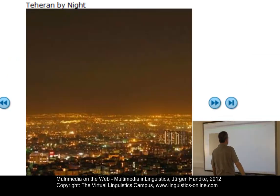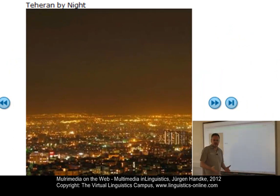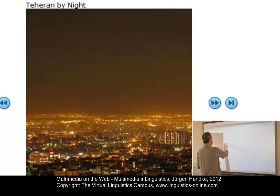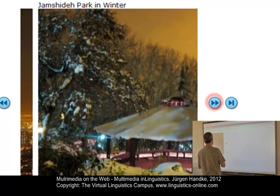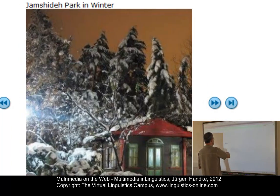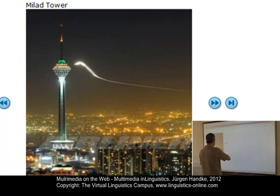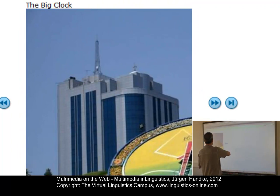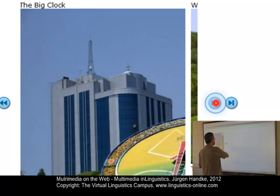And finally, we have illustrations. It is a good idea to couple language index entries with photos about a specific location. Here you see pictures of the Persian capital, Tehran, presented in a photo show, which can be associated with the speaker whose version of Persian was recorded.